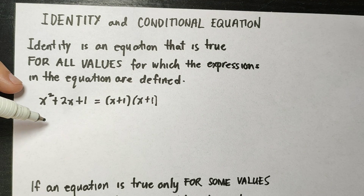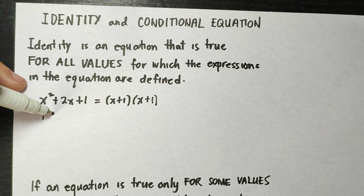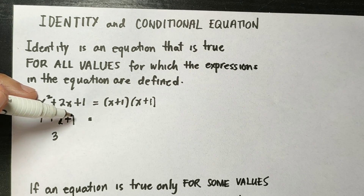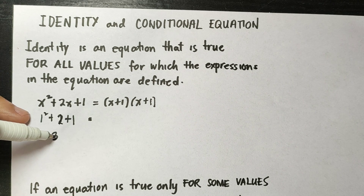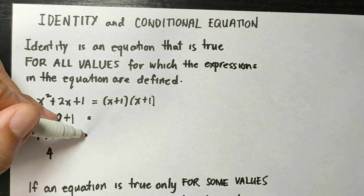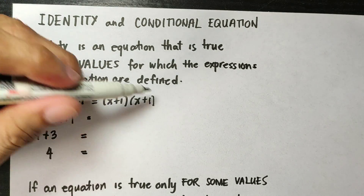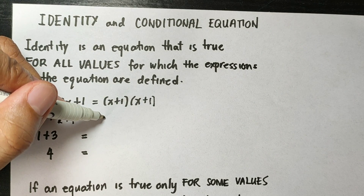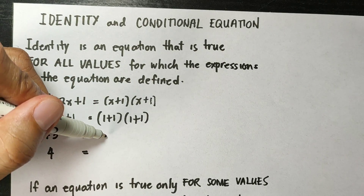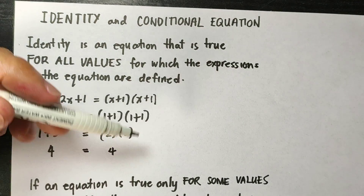Let's say when x is 1. That will be 1 squared plus 2 times 1, so 1 plus 2 is 3 plus 1 equals 4. This is also equal when you evaluate the right-hand expression when x is 1: 1 plus 1 is 2 times 1 plus 1 is another 2, and 2 times 2 is 4. So this is an identity.